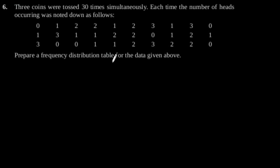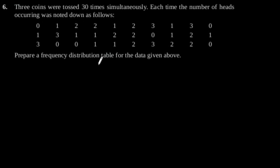Exercise 14.2, Question number 6. Three coins were tossed 30 times simultaneously. Each time the number of heads occurring was noted down as follows. Prepare a frequency distribution table for the data given above.